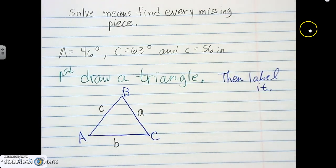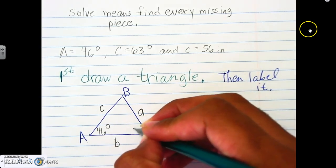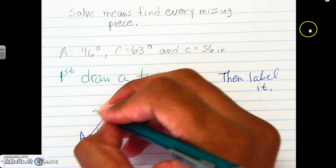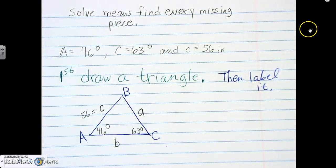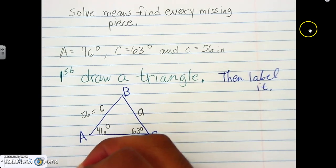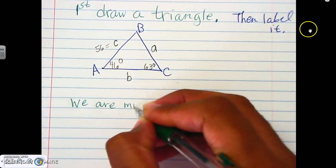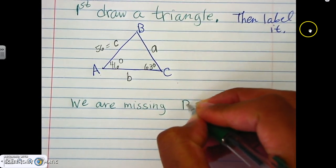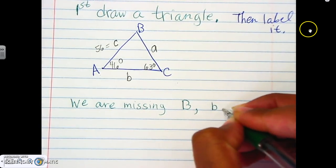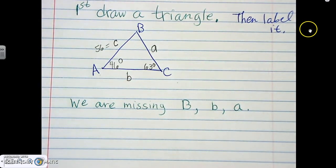Since 'solve' means find every missing piece, we fill in what we have: 46 for angle A, 63 for angle C, and 56 for side c. That means we are missing angle B, side b, and side a. Those are what we need to find using the law of sines.